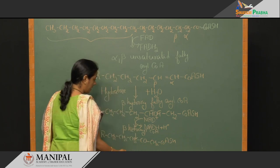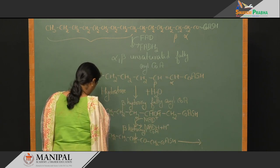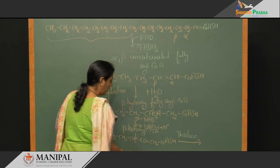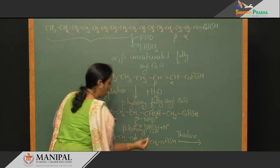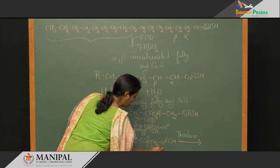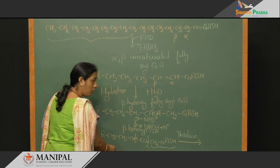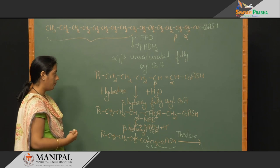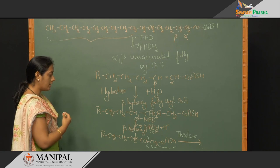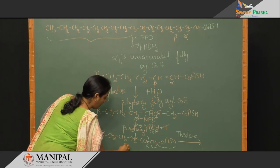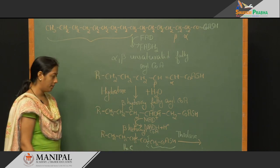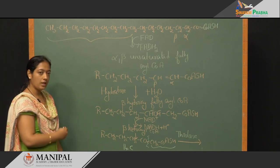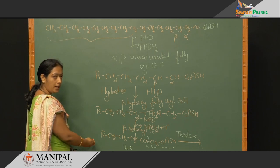The last enzyme is thiolase, which performs the cleavage reaction. Thiolase cleaves the bond between the alpha and beta positions. The product formed is acetyl-CoA, and the long chain fatty acid is left with two carbon atoms fewer than its original chain. For palmitic acid with 16 carbons, at the end of this reaction it is left with 14 carbon atoms. The remaining fatty acid further undergoes the same four reactions, and this repeats until the fatty acid is completely oxidized.